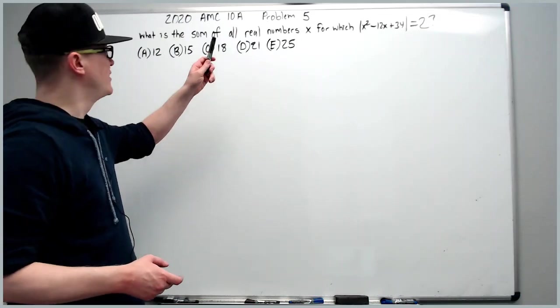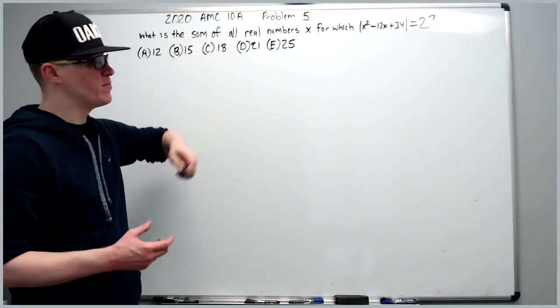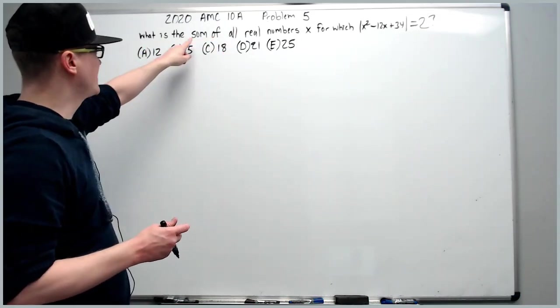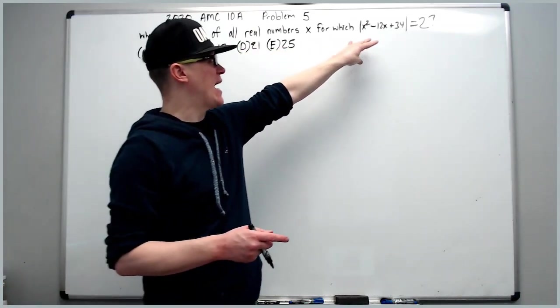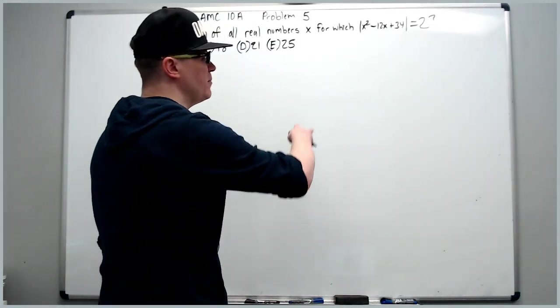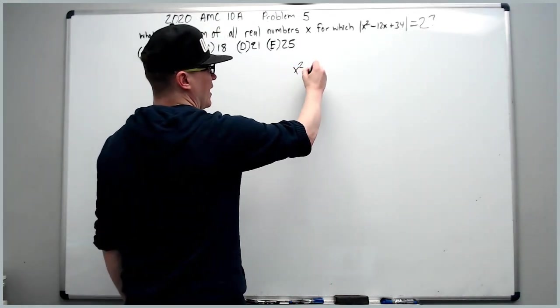All right, and the last problem of the set, the 2020 10A problem 5. What is the sum of all real numbers x for which the absolute value of this equals 2?